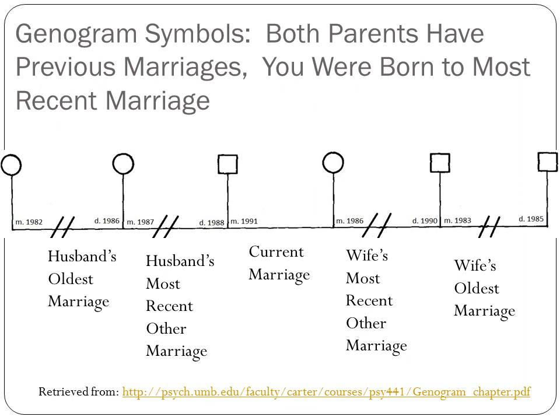What if someone has been married multiple times? If your parents are currently married but had previous marriages, we have the square and circle connected by a solid line in the middle, with M. 1991 in the bottom left-hand corner of their relationship — no backslashes, indicating they are still married. Previous marriages are depicted extending outward from each person.